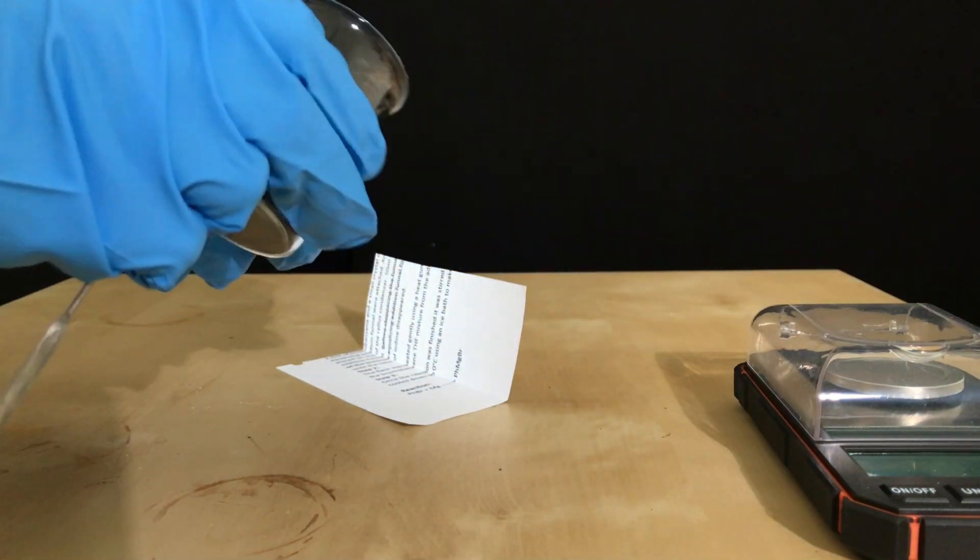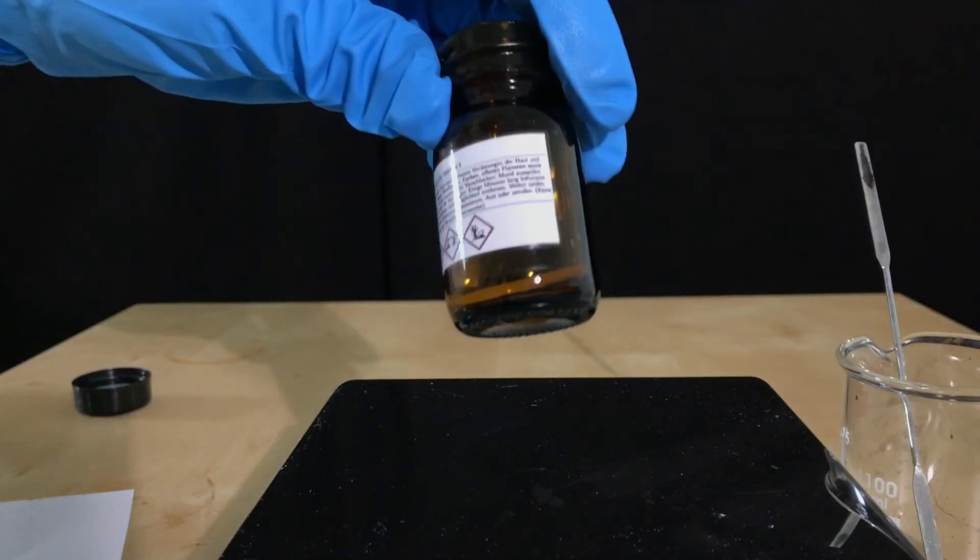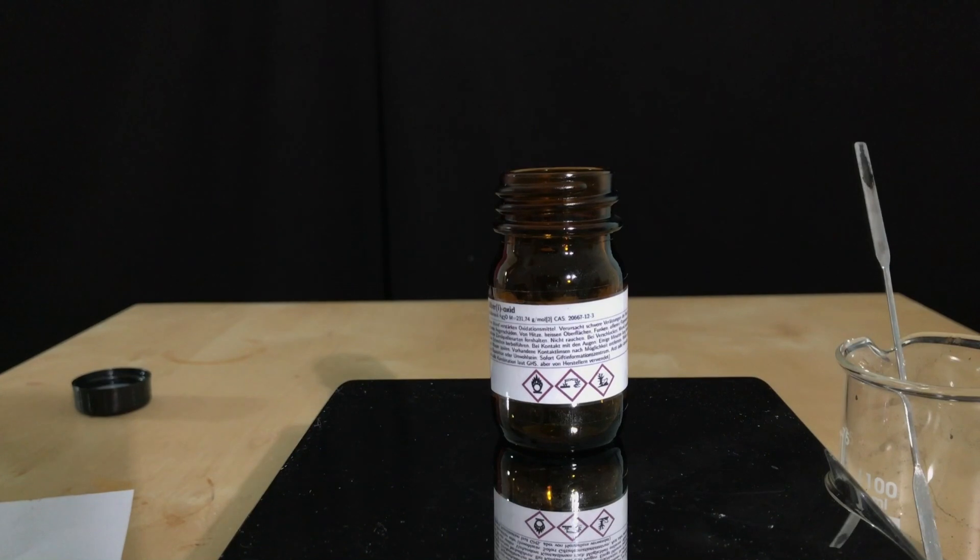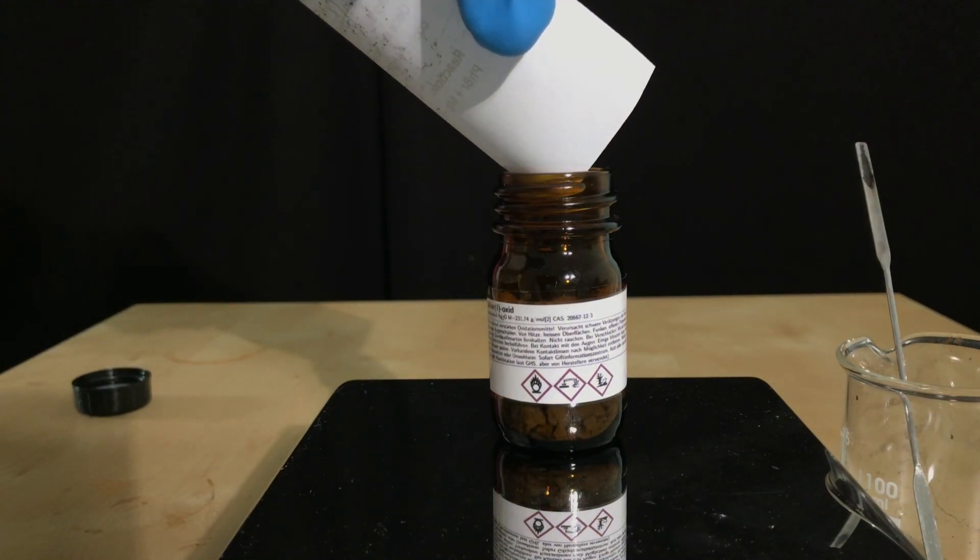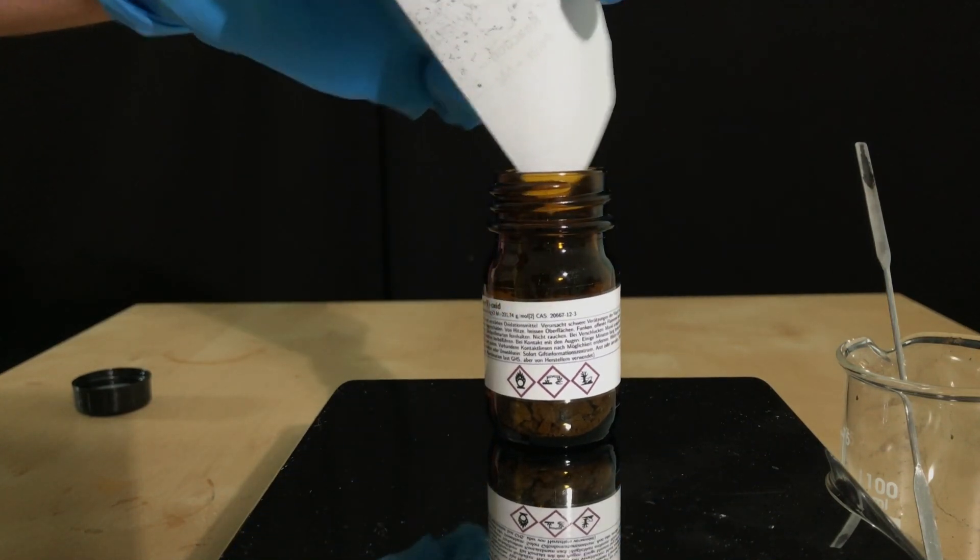Once the big chunks were broken up, they were transferred to a piece of paper to take a few nice pictures. As a storage container I'm using this good looking glass bottle. It was placed on a scale and the scale was set to zero. As it turns out I couldn't use my small scale, because the container is too heavy. Therefore I had to use this other scale and we ended up with 6.7 grams of silver(I) oxide. This corresponds to a yield of about 98.2%.